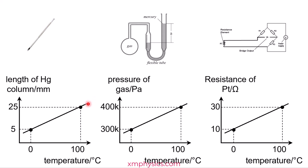But definitely the graph will not be straight when the mercury is near its boiling point or freezing point. Likewise, I don't think the pressure variation is linear when the gas is about to liquefy or when the platinum wire is about to melt.